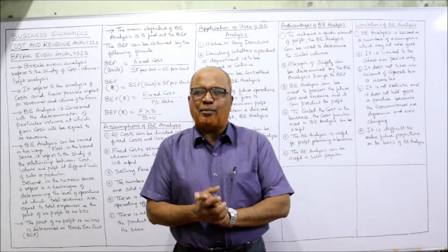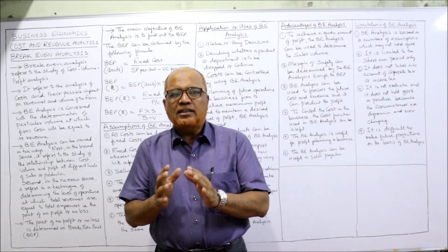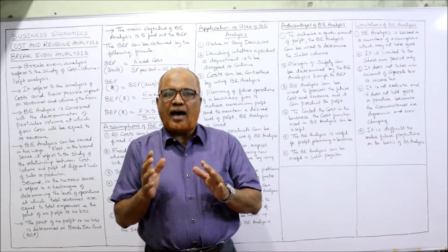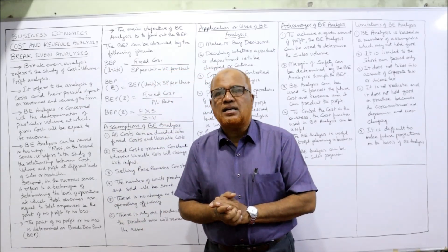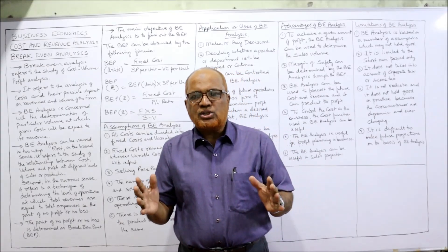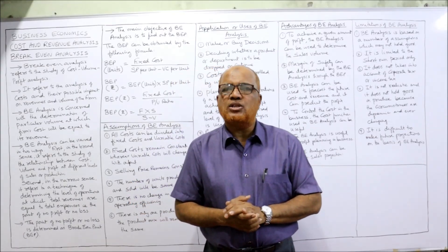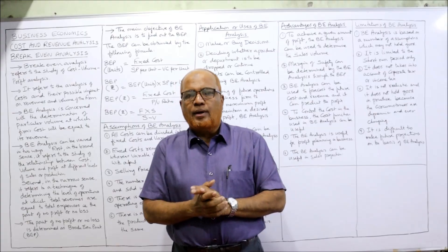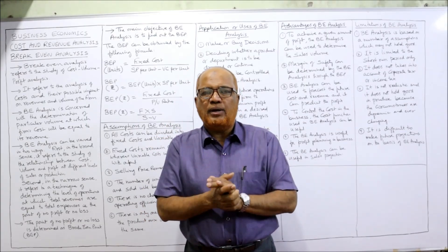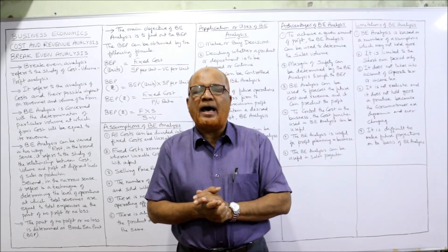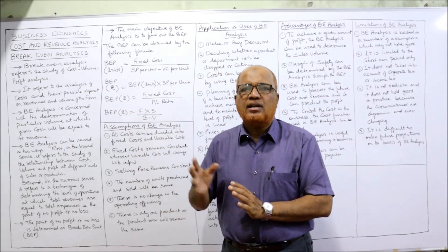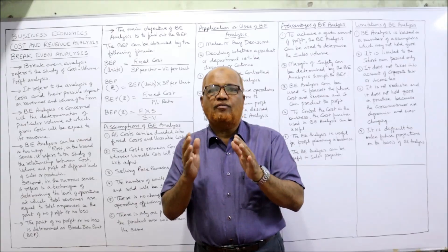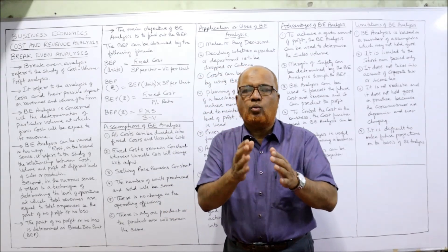Hello viewers, welcome to my channel. I am Hashem Ali Khan. In this video I am going to explain break-even analysis. Break-even analysis is a study of marginal costing. Two types of costing are there: absorption costing and marginal costing. In marginal costing we divide the cost into fixed and variable. By distinguishing cost into fixed and variable, we can find how to take a number of managerial decisions. Break-even analysis is a part of marginal costing — it's a study of profit, volume, and cost relationship.